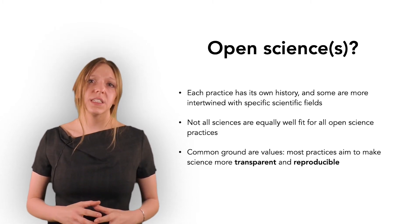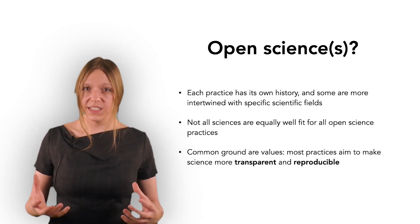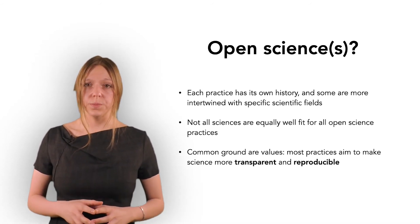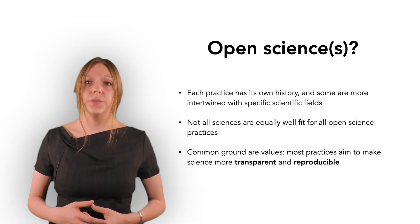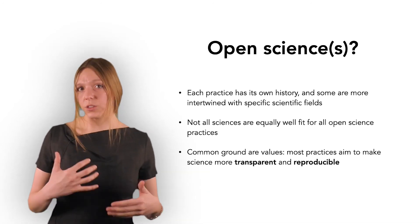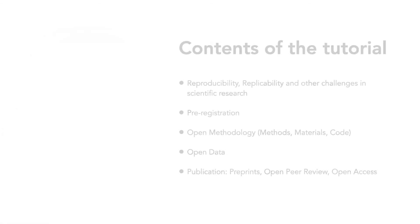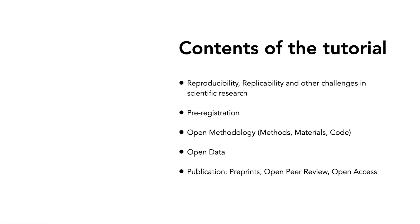Despite these differences, the common basis to all parts and practices of open science are the values. Most practices aim to make science more transparent and reproducible. This tutorial will cover the following: reproducibility, replicability, and challenges in scientific research; pre-registration; open methodology including open methods, open materials, and open code; open data; and finally all practices related to publication — preprints, open peer review, and open access.